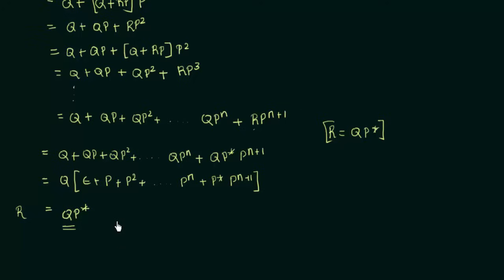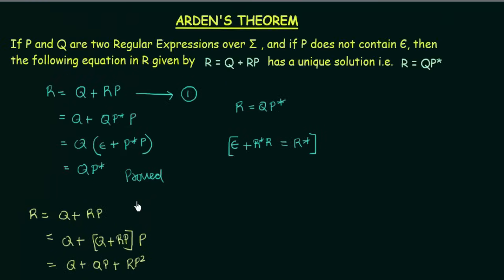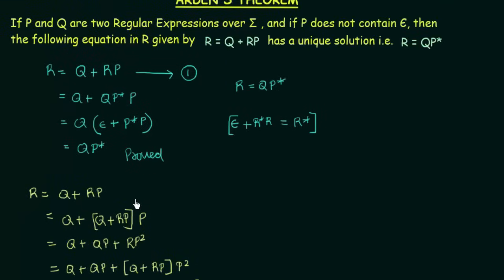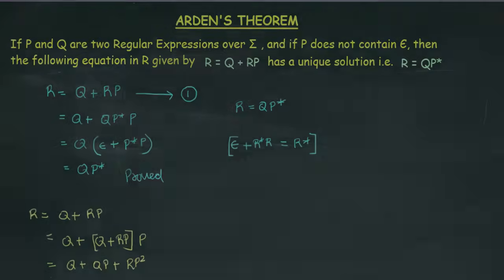This is how we prove Arden's Theorem. Once we prove it, we can write r = qp* whenever we get this kind of equation. I hope that was clear to you. Thank you for watching and see you in the next one.